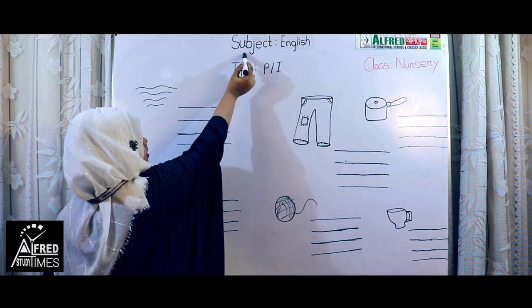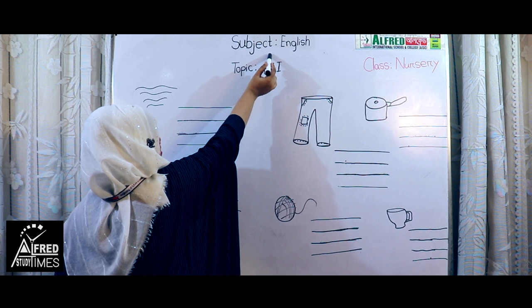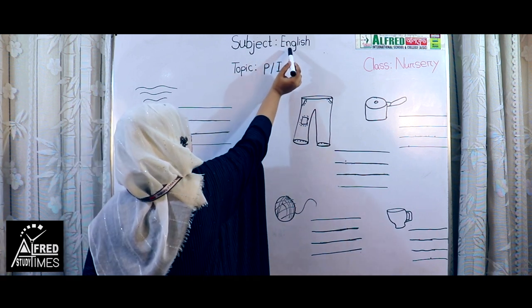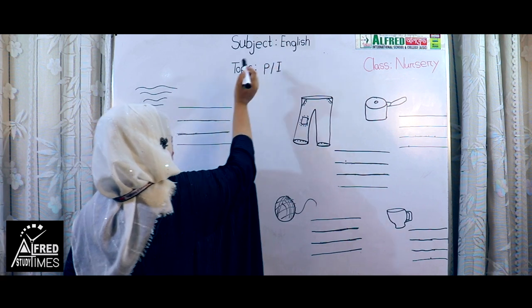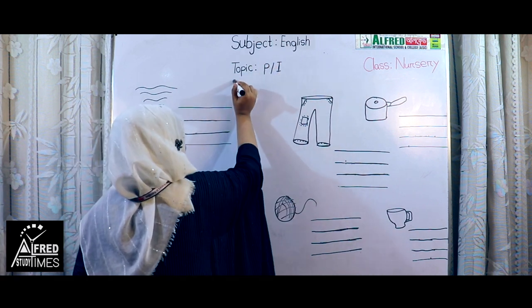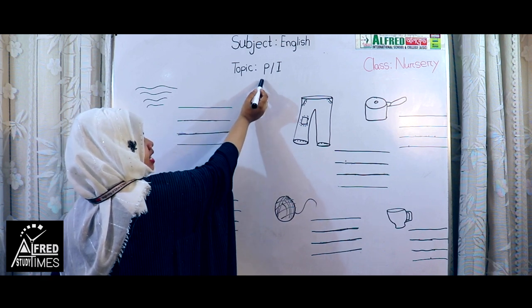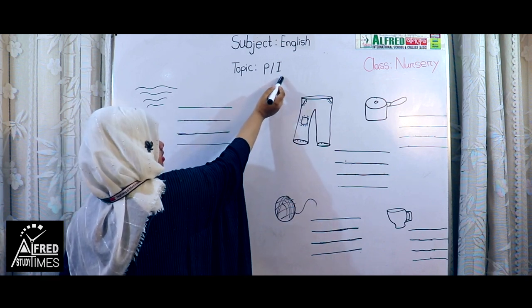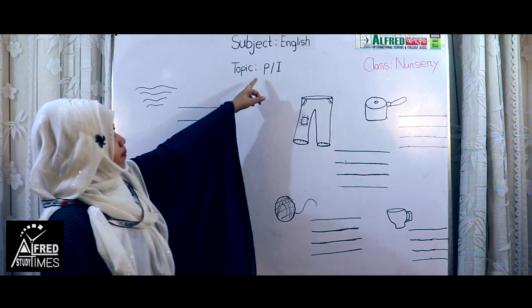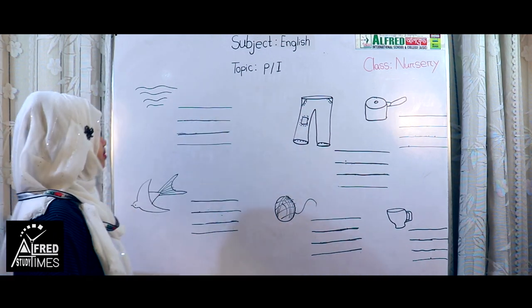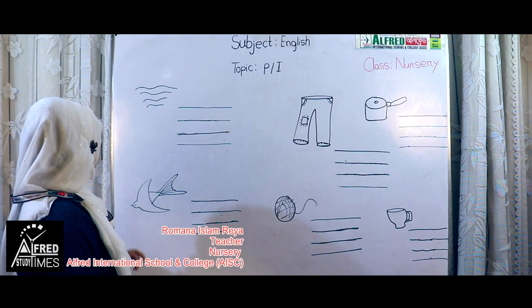Subject: S-U-B-J-E-C-T, subject. English: E-N-G-L-I-S-H, subject English. Topic: T-O-P-I-C, topic. Picture identification. Short form: P.I.